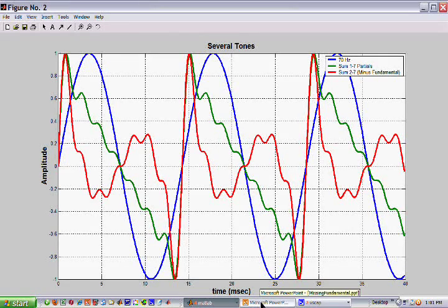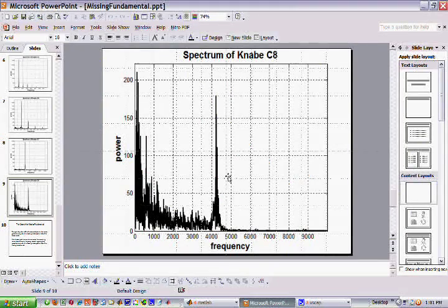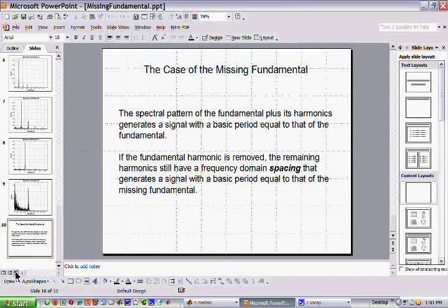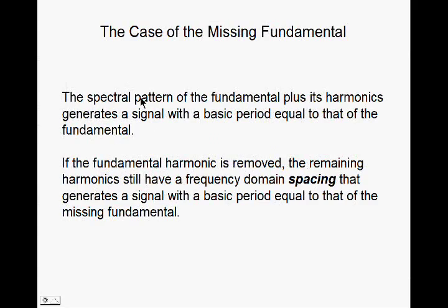Okay, let's go back to our summary. I'm going to read this to you. The spectral pattern of the fundamental plus its harmonics generates a signal with a basic period equal to that of the fundamental. If the fundamental harmonic is removed, the remaining harmonics still have a frequency domain spacing that generates a signal with a basic period equal to that of the missing fundamental.